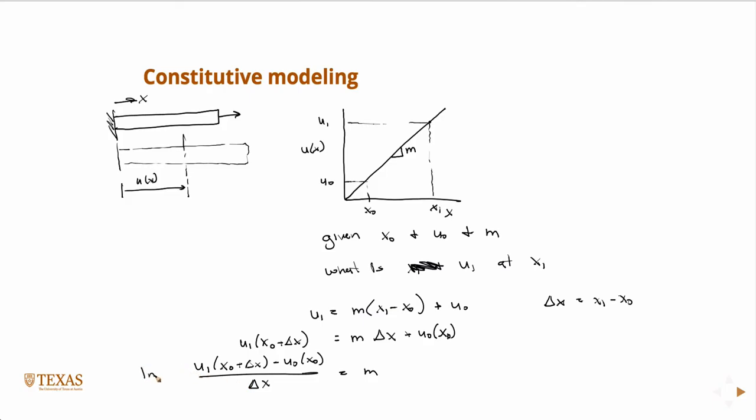And then if we were to take the limit of this as delta x goes to 0, then on the left-hand side we have the definition of a derivative. So this is like partial u partial x. And of course, we know that visually that's the slope of the line, right? That's m.